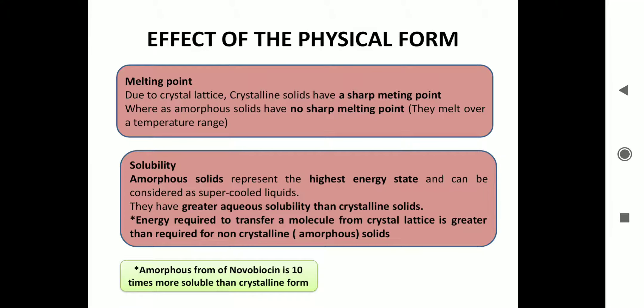Now the important point to be discussed is, what is the effect of the physical form in relation to pre-formulation? The first point is melting point. Due to the crystal lattice, crystalline solids have a sharp melting point, whereas amorphous solids have no sharp melting point and they melt over a temperature range. Because crystalline solids have atoms or molecules arranged in a specific order, they melt at a sharp melting point. Whereas amorphous are randomly placed, so amorphous solids have no sharp melting point. They melt over a temperature range.